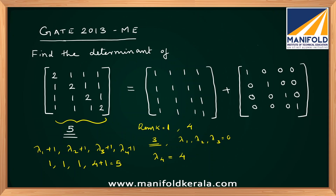Now applying the second property, the product of eigenvalues gives the determinant of the matrix. So the determinant equals 1 times 1 times 1 times 5, which equals 5. It is very easy to visualize this problem as the sum of two matrices and give the answer directly as 5. Thank you.